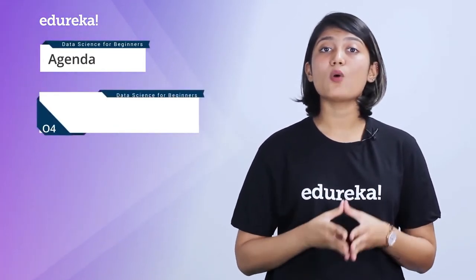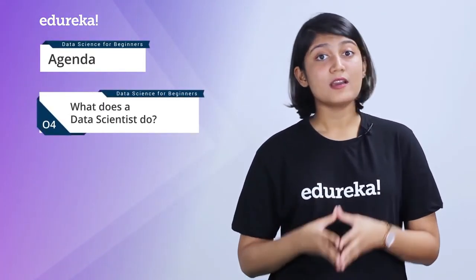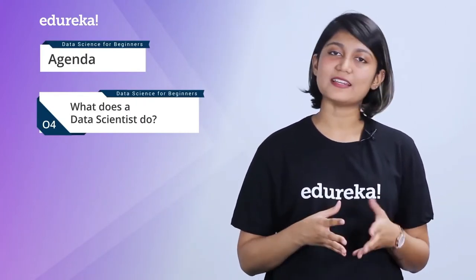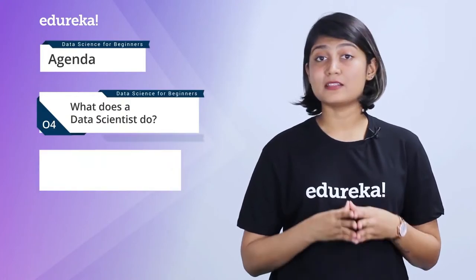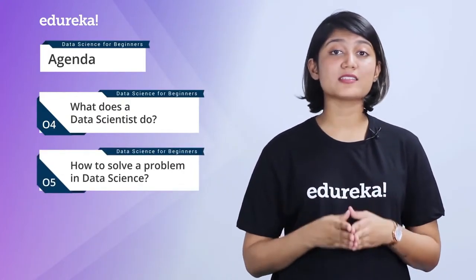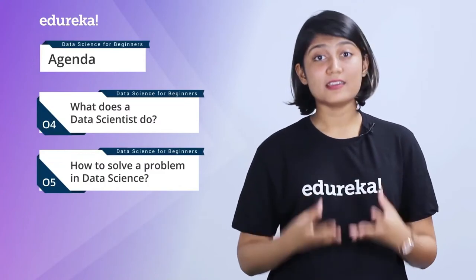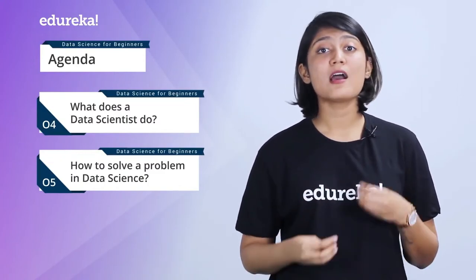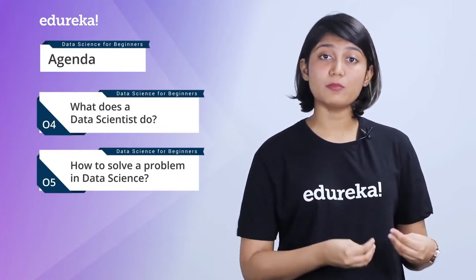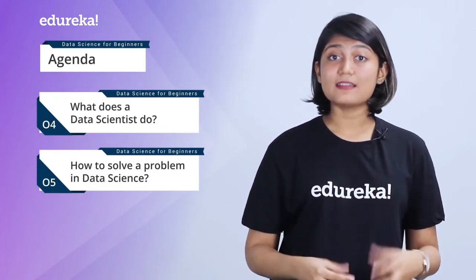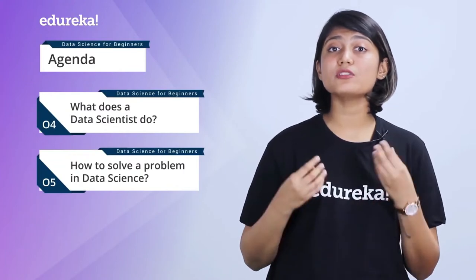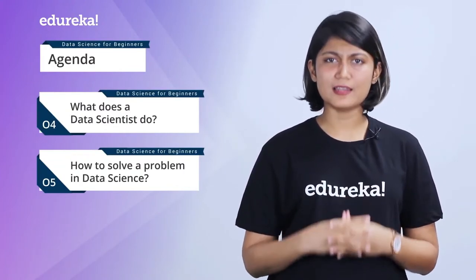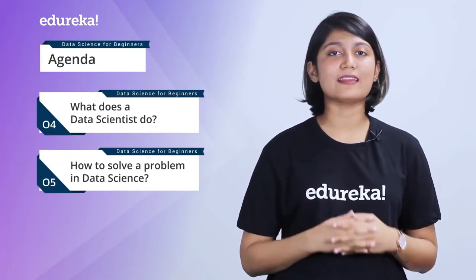Then we have what does a data scientist do — the day-to-day roles and responsibilities. Number five is very crucial: we're going to discuss how does a data science solution work, the lifecycle of a data science solution, how to approach different problems, and how to look for solutions using machine learning. Through this process, I'm also going to talk a little bit about machine learning and its types.